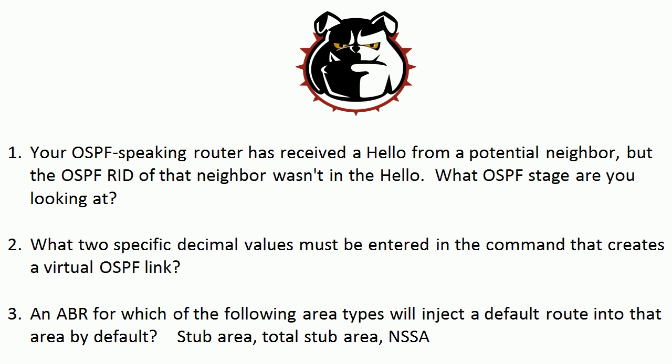First question today: your OSPF-speaking router has received a hello from a potential neighbor, but the OSPF RID of that neighbor wasn't in the hello. What OSPF stage are you looking at? Question two: what two specific decimal values must be entered in the command that creates a virtual OSPF link? What two specific values do we need in that command? That's a tricky command — we're going to look at that live in a moment.